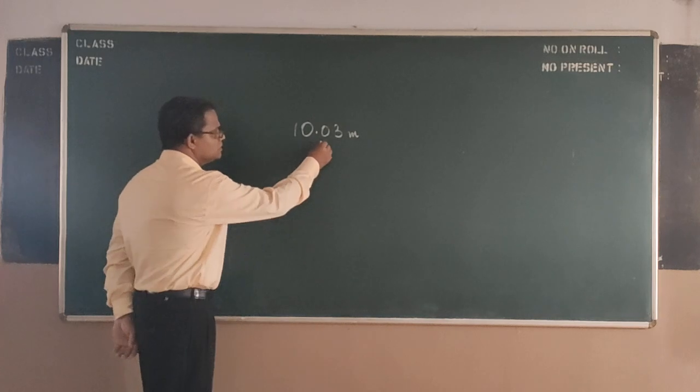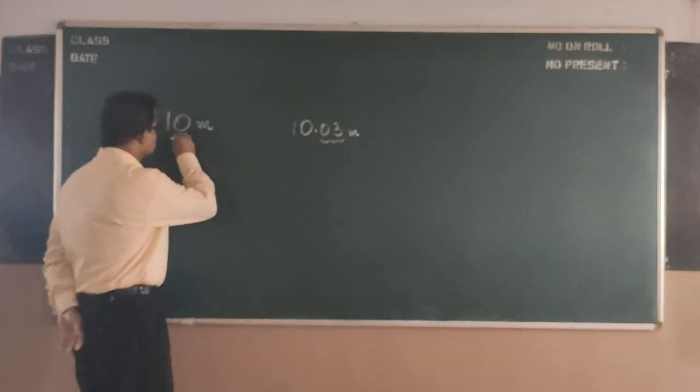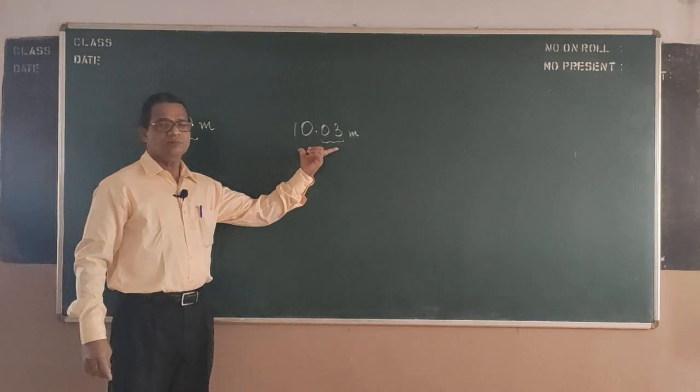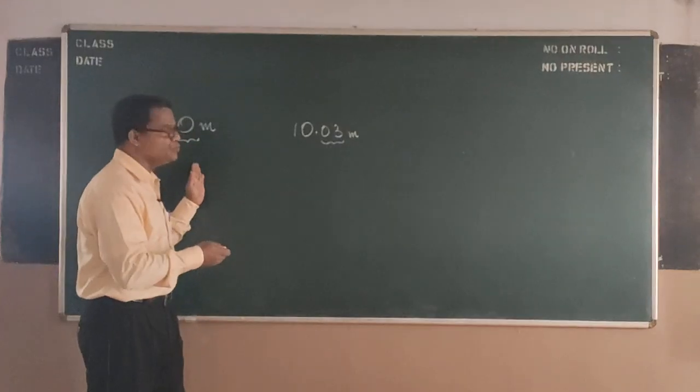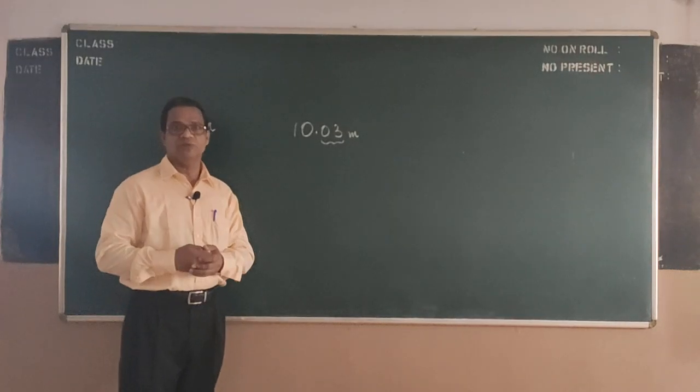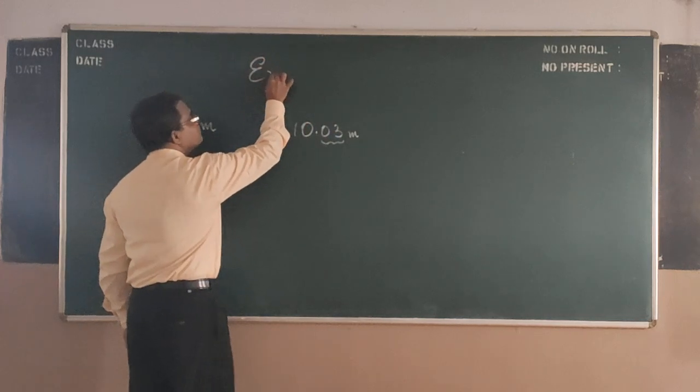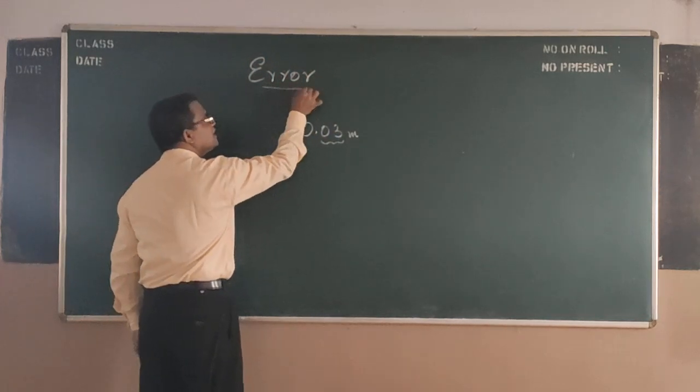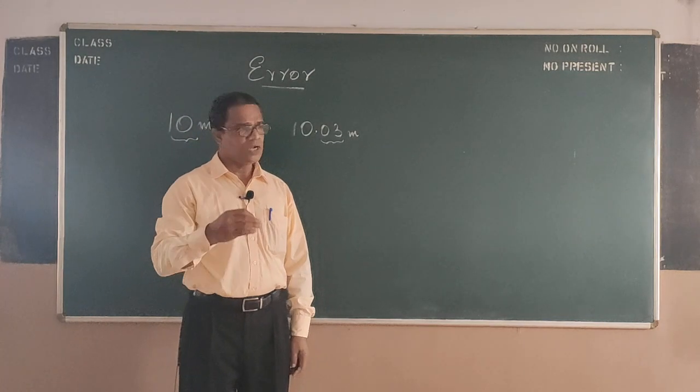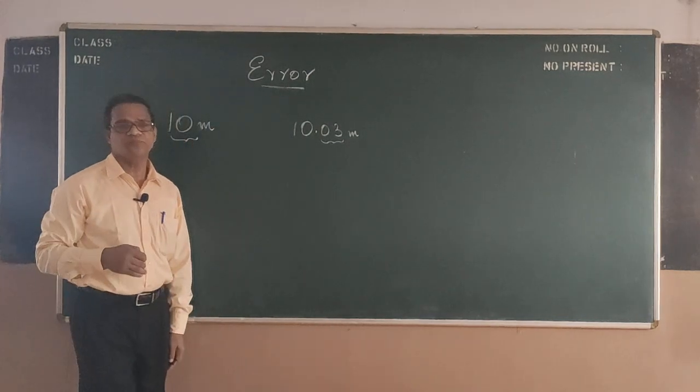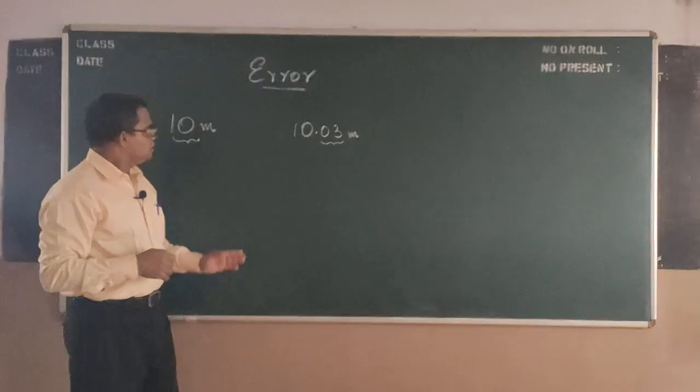So this discrepancy - the actual value is this one and this is the measured value. There is a deviation from the actual value to the measured value. That deviation we call as error in the measurement. So we are talking about error in this session.